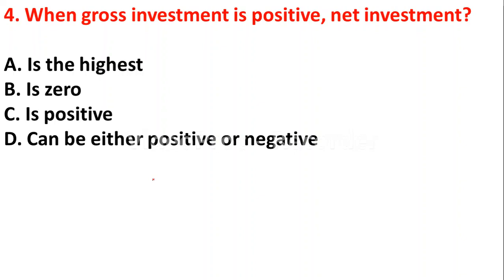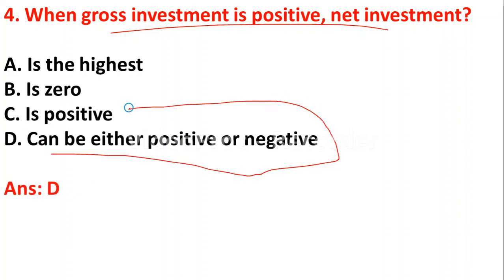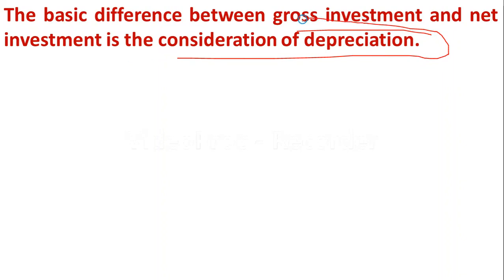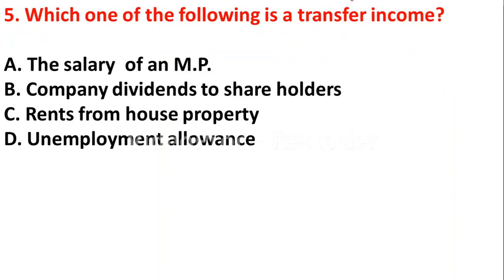Question 4: When gross investment is positive, net investment — A) is the highest, B) is zero, C) is positive, D) can be either positive or negative. The answer is D — net investment can be either positive or negative. The difference between gross investment and net investment is the consideration of depreciation.